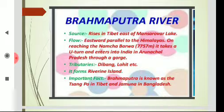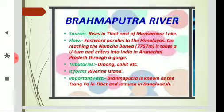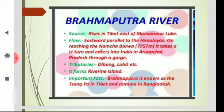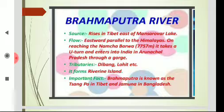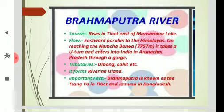River Brahmaputra rises in Tibet, east of Mansarover lake. It flows eastward parallel to the Himalayas. On reaching the Namcha Barwa — a mountain peak of 7,757 meters — near this mountain peak, the Brahmaputra river takes a U-turn and then enters into India through a gorge in Arunachal Pradesh.